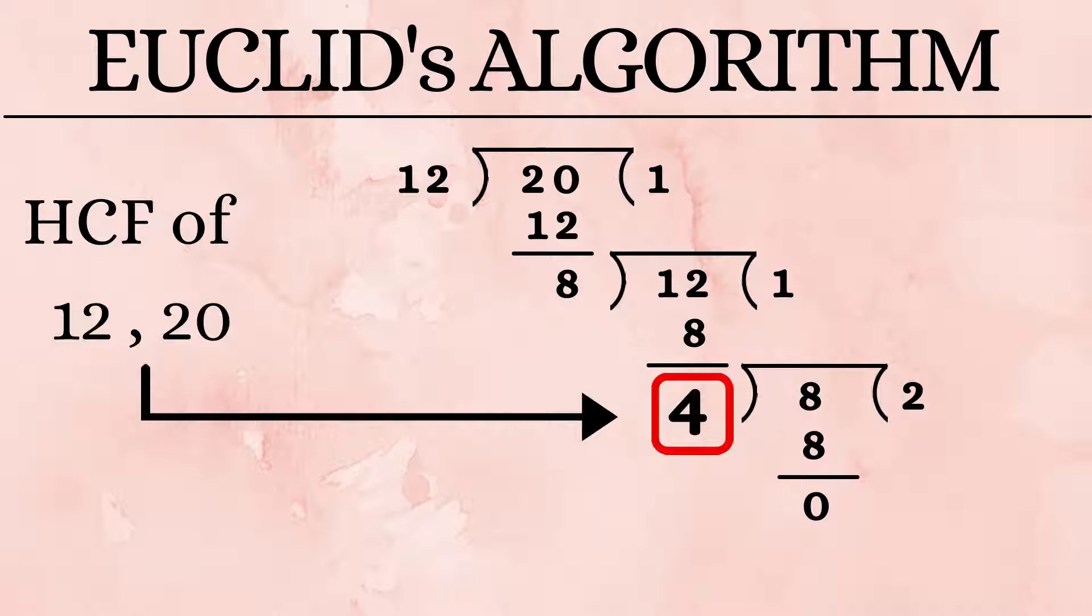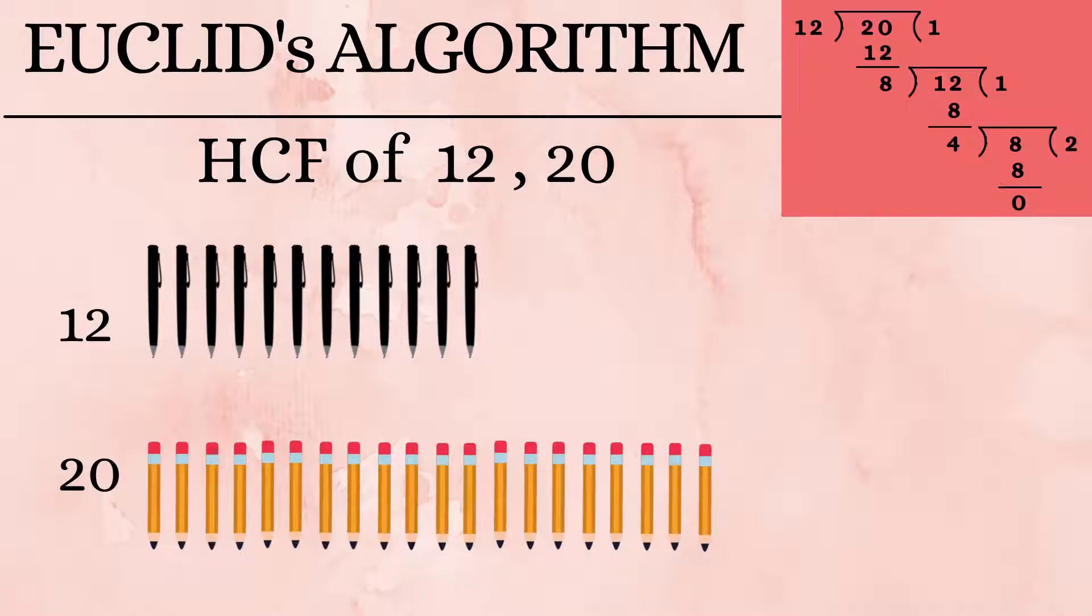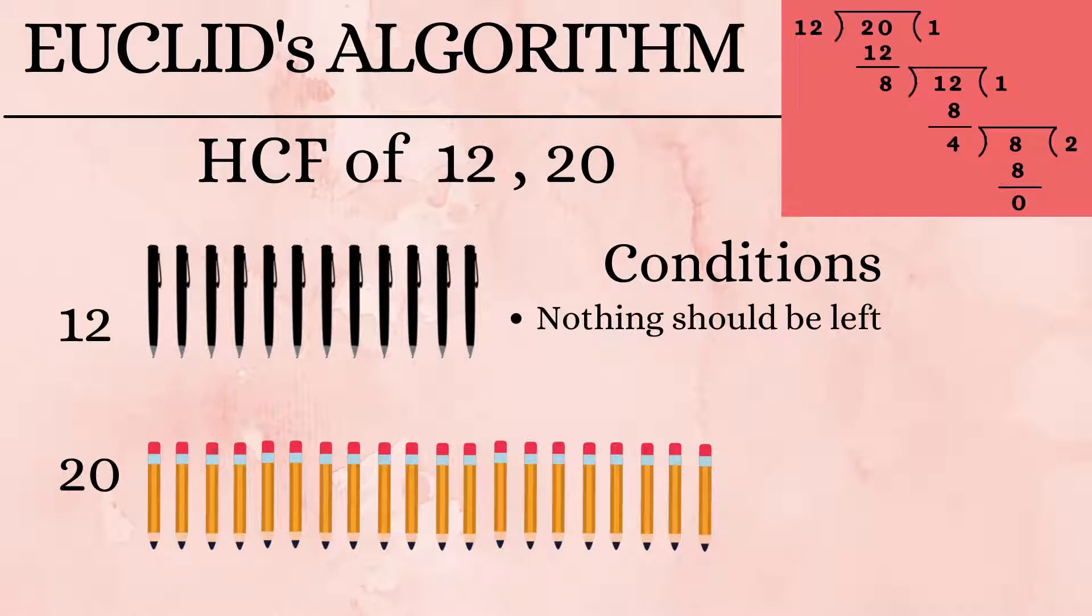Let us say that Anne's mom has given her 12 pens and 20 pencils. She asks Anne to share it with her friends, the maximum number of friends possible. But she gives her 2 conditions: there should not be any pencil or pen remaining, and all of her friends should get an equal share.